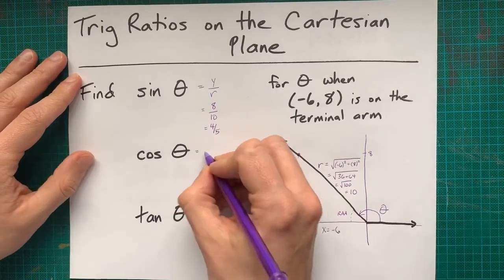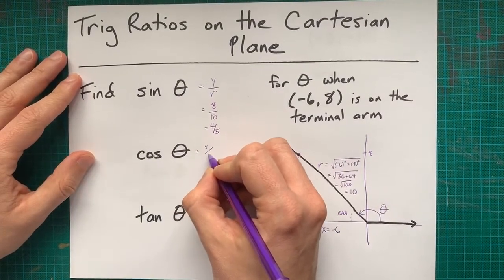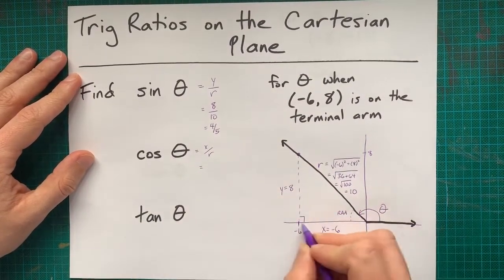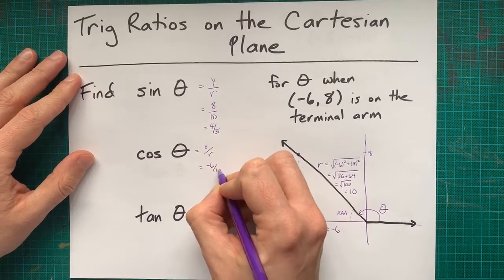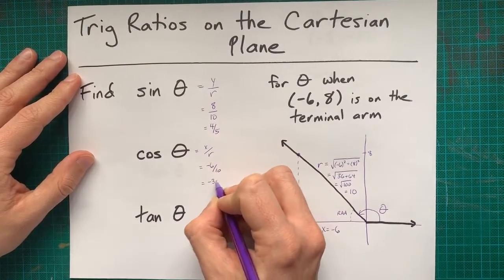You can do the same for cos. Cos is x over r. That's negative 6 over 10, which is negative 3 fifths.